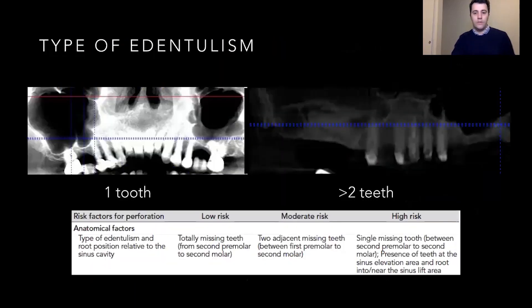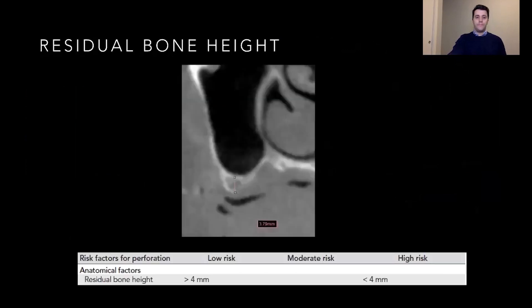The type of edentulism plays a role in whether the case is more straightforward or more complex. If the patient is missing more than two teeth, the elevation will be easier compared to a single-tooth case, especially if roots are inside the sinus, which makes membrane elevation more complex. Residual bone height has been controversial in the literature — some studies say it plays a role, some say it doesn't — but generally when the sinus is less than 4 millimeters, it is considered a higher risk of perforation.